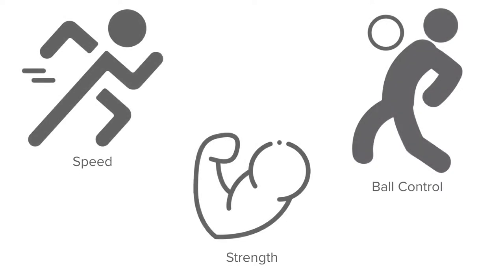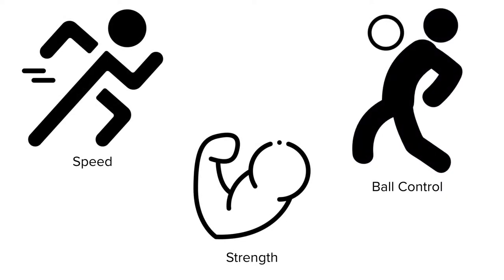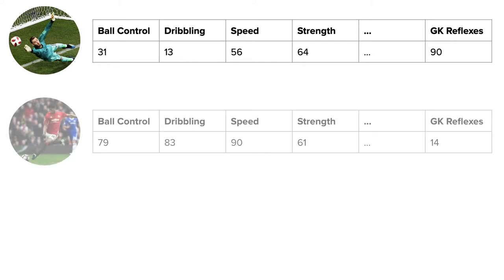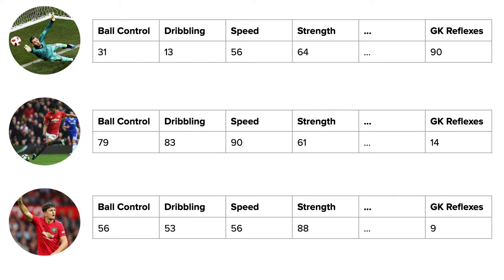How do we decide where they should play? Could speed, ball control, and strength play a part? Can we use this data to determine which is the best position for the player? Our goalkeeper De Gea has exceptional goalkeeping reflexes. Our striker Rashford is really quick and good at dribbling. Our defender Maguire is incredibly strong. It really seems as though we can use these attributes to determine the most suitable position for a player.